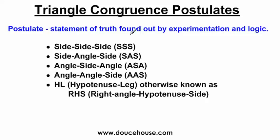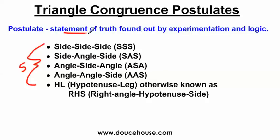A postulate is a statement of truth found out by experimentation and logic. Basically, over time, people have come up with a combination of five different ways you can compare angles and sides on triangles to prove that two triangles are congruent. So it's a statement of truth — triangle congruency statements of truth. And if we can come up with specific combinations of sides and angle relationships between triangles, we can prove triangles are congruent.